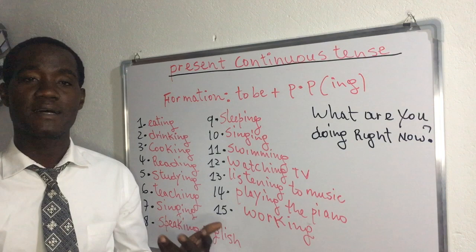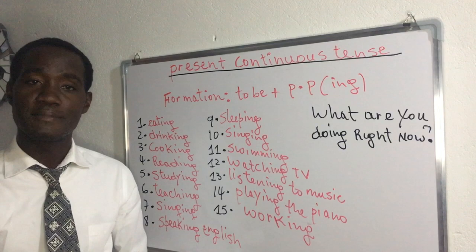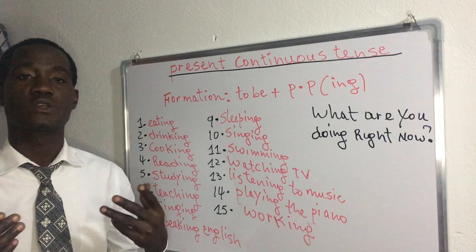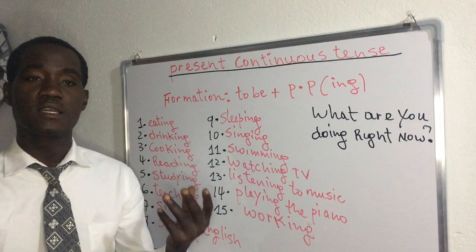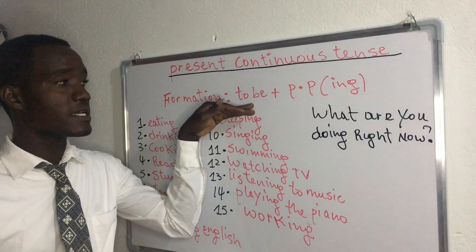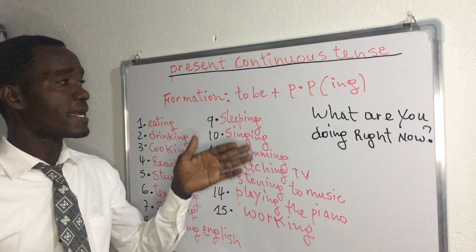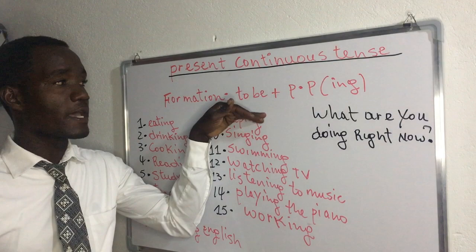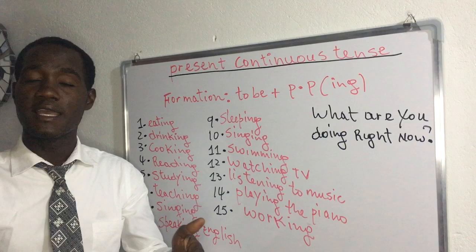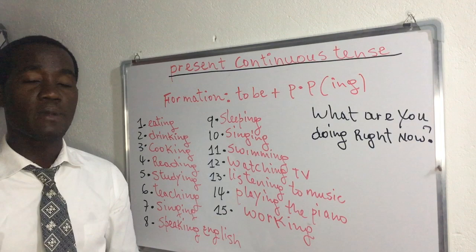We use the Present Continuous Tense to talk about something that is happening at the present time — that is to say, the action is happening at the time of speaking. Nou itilize présent progressif lè pou nou pale de yon bagay kap fèt kounya — nan moman ki m'ap pale a. To form it, you need the auxiliary 'to be' plus the present participle. After the auxiliary 'to be', you take the base form of the main verb and add I-N-G. Se konsa ou kapab formé présent progressif en anglais.